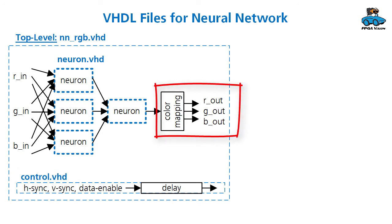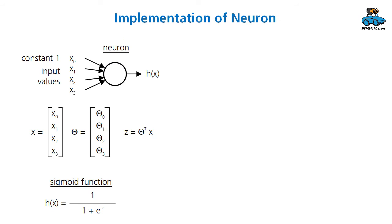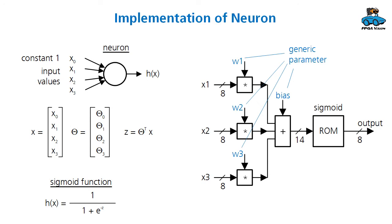Color mapping is coded directly in the top level. For the implementation of the neuron, we had the general information about the function in a previous lecture. We have a combination of several input values with the parameters theta and then the sigmoid function. This structure can be translated into hardware.